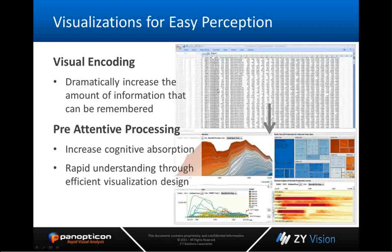Panopticon does this through visual encoding. If you take a typical spreadsheet with volumes of data you can't derive anything out of it, but by putting colors, shapes, and groupings around them, you can very quickly identify that a large blue area means everything's going well, a large red area means everything's going poorly, and then you can drill down into that visually to analyze data much quicker and faster. Rapid understanding through efficient visual design is what Panopticon is all about.